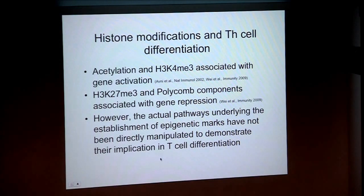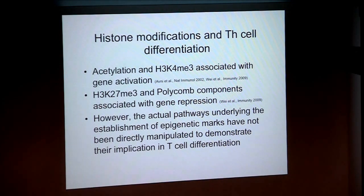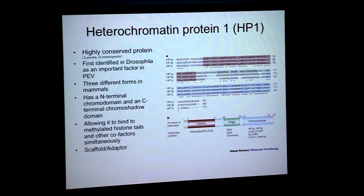What's known about histone modifications and T cell differentiation? There's a lot of information about histone acetylation and histone H3 lysine 4 trimethylation being associated with gene activation. Also lysine 27 of histone H3 trimethylation is known to recruit polycomb components and be correlated with gene repression. However, the actual pathways underlying how these marks are established have not been directly manipulated to see how they're implicated in T cell differentiation — and that's what I'd like to focus on.